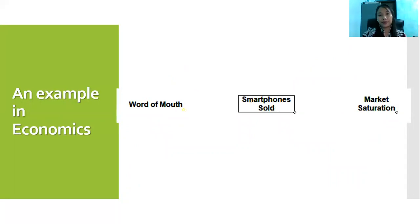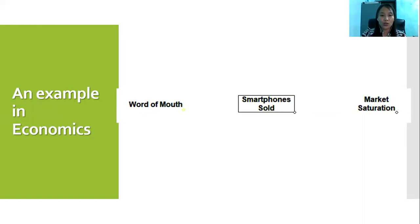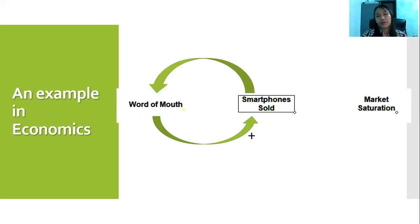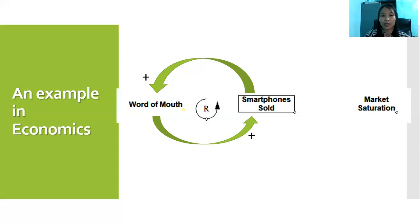Here is another example. When a consumer adopts a hot new smartphone — maybe an iPhone — more potential consumers will encounter it and will likely buy one for themselves, strengthening word of mouth, so there is a positive polarity. If there are more smartphones sold, it leads to more advertisement through word of mouth, creating a reinforcing loop.